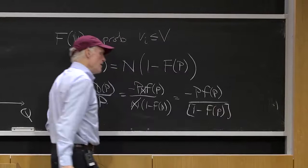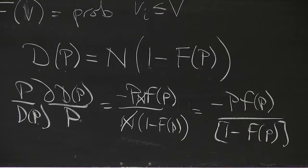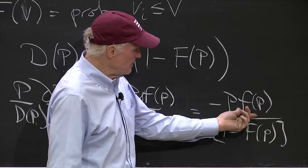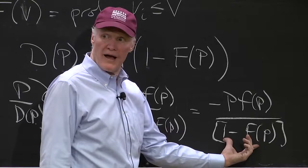And so the elasticity of demand sort of depends on how many people there are on the margin relative to how many people are already buying, right? This is the fraction that are already buying the good and this is how many people are on the margin.